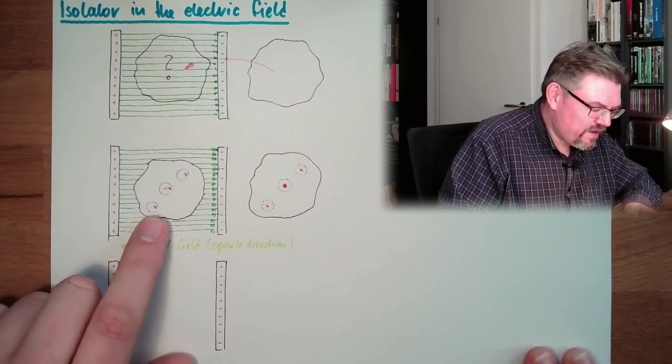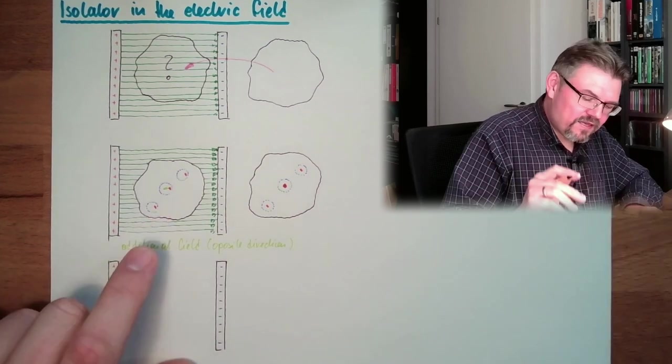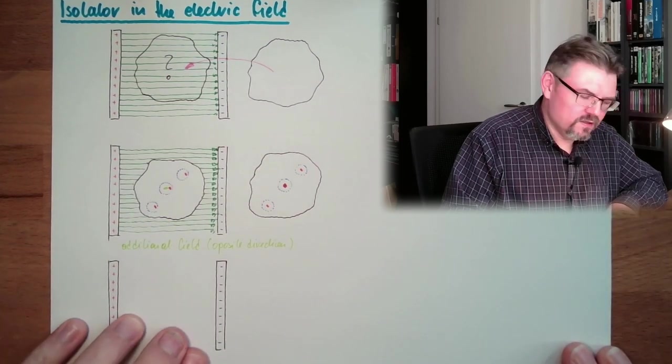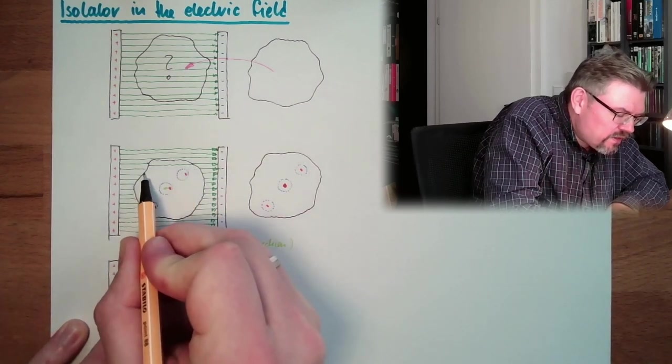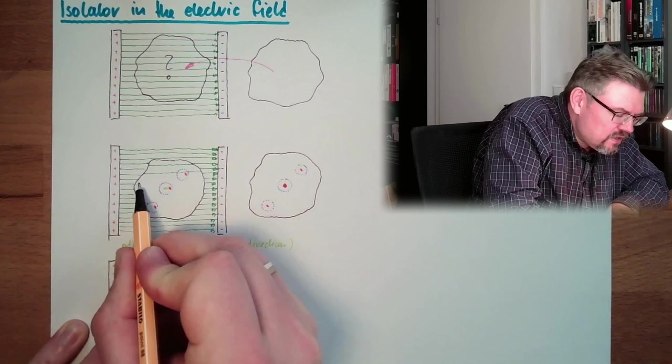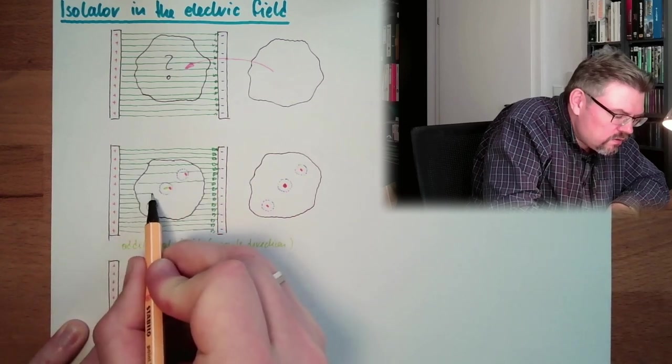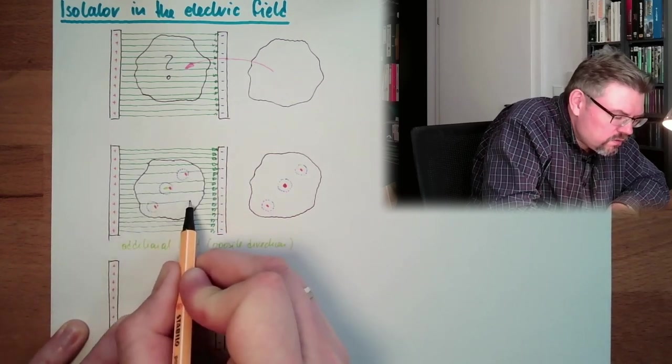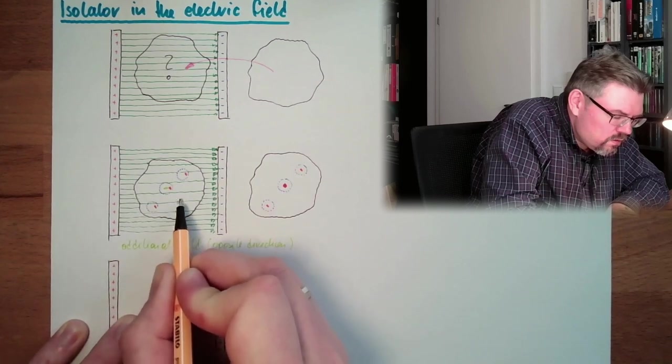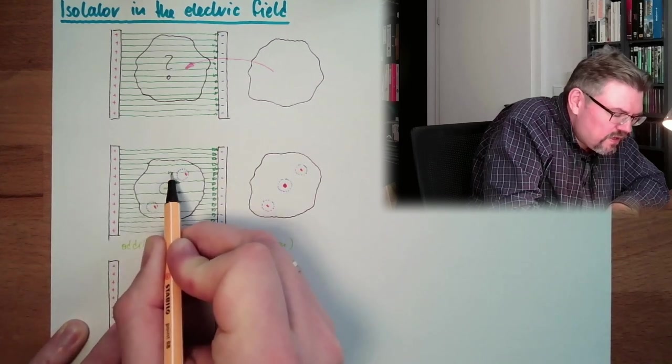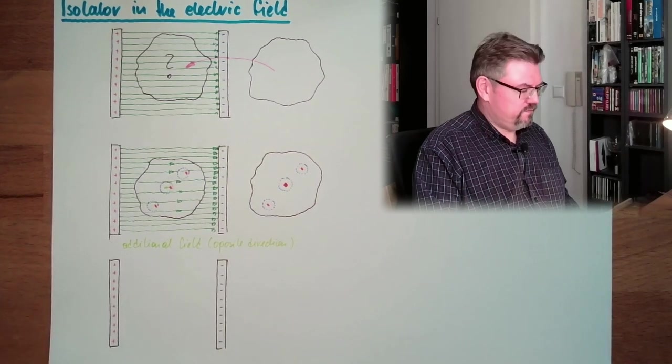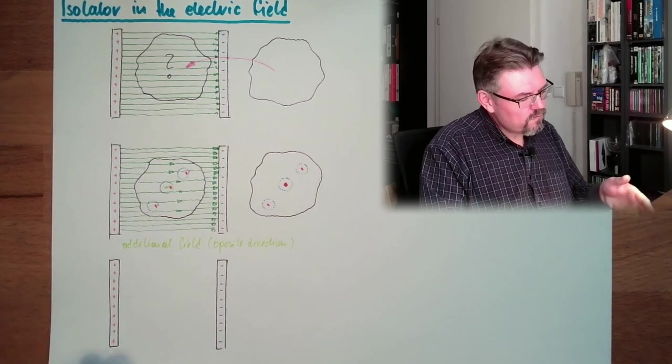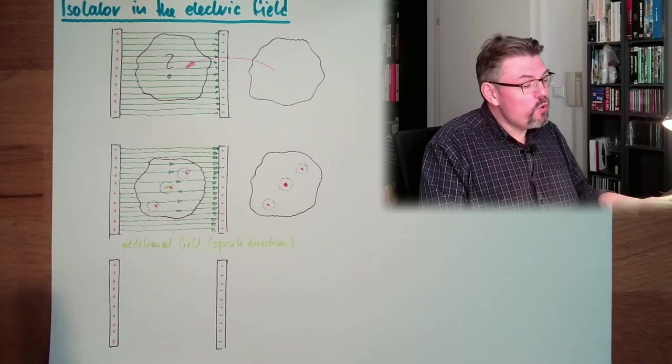So actually, what is happening inside there is that the external field is weakened. So we don't have that much field inside. The density of the field lines is lower because this additional field is deleting this field a little bit.